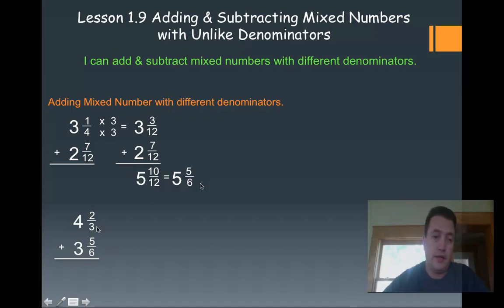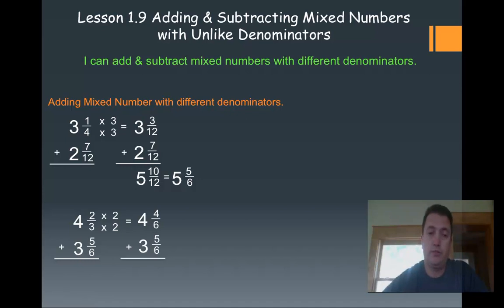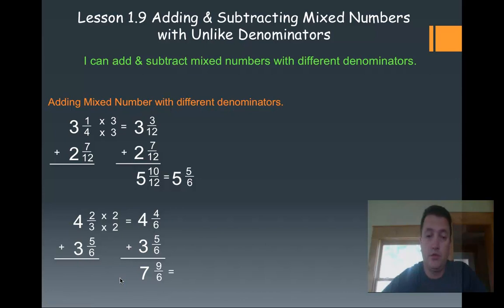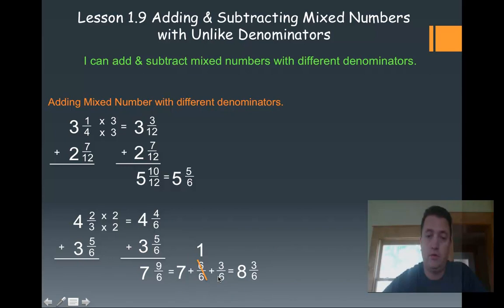Now let's look at the next one. I've got 4 and 2 thirds plus 3 and 5 sixths. Here 3 is a factor of 6, so I can leave 6 as my denominator and multiply the numerator and denominator by 2. That gives me 4 and 4 sixths plus 3 and 5 sixths. Adding those together, I get 9 sixths for the fraction and 7 for the whole number. I've got a fraction greater than 1, so I have to convert. I'll break 9 sixths into 6 sixths plus 3 sixths. Crossing out the 6 sixths gives me a whole number of 1. So 7 plus 1 plus 3 sixths gives me 8 and 3 sixths, which simplifies to 8 and 1 half.